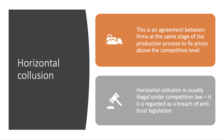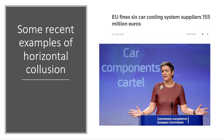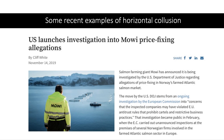Collusive price fixing between firms is when competitors at the same stage of production agree not to compete over a given product. Here are some recent examples: in 2017, the European Union's competition authority fined a number of car parts makers — including Valeo and Denso — over 155 million euros for having operated cartels in several markets.